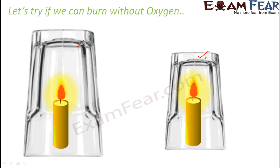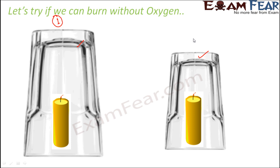Now, what do you observe? The candles are still glowing for some time even when covered with the glass, but after some time the candle within the smaller glass gets extinguished first. Then after some more time, the other candle also goes off. Let's name them candle one and candle two — candle two went off early.